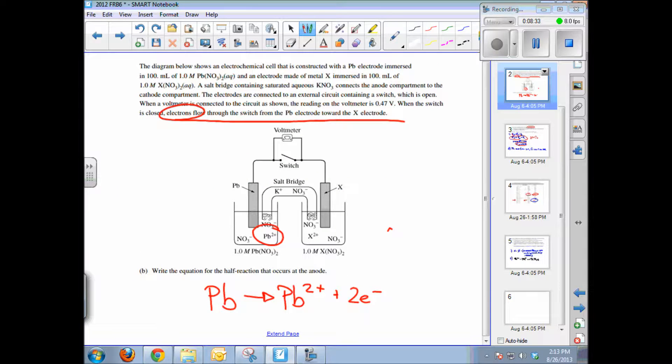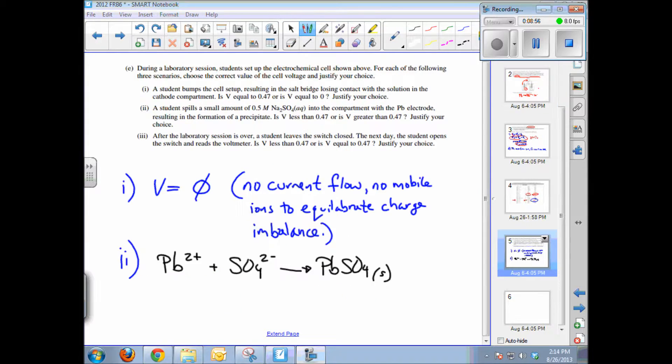And so in essence, you are removing lead from solution. And if you remove lead in solution on the anode side, you will drive the lead to oxidize more and create more electrons. Essentially, as you decrease lead concentration, the anode reaction becomes more favored thermodynamically. And you will generate more electrons from the oxidation of lead to flow through the current. So we can say then if the sodium sulfate is spilled into the side containing the lead electrode, that the voltage increases and voltage will be greater than 0.47 volts.